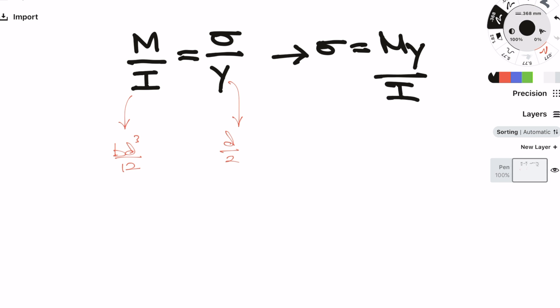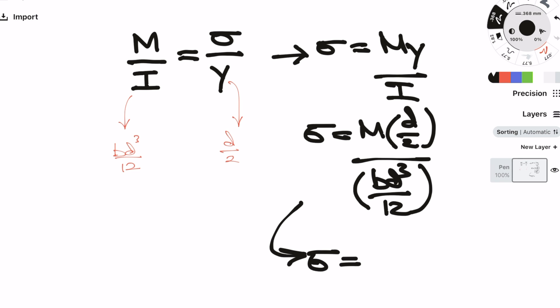It's called the Missy equation because M stands for moment over I for the second moment of area, which is equal to σ (stress) over y for the depth to the neutral axis. This equation requires you to know the second moment of area or the moment of inertia formula I mentioned earlier.